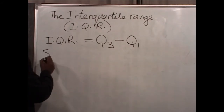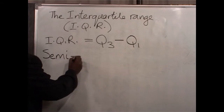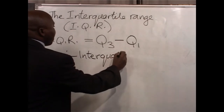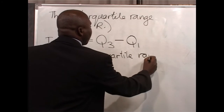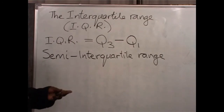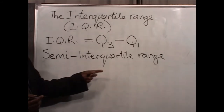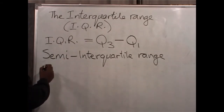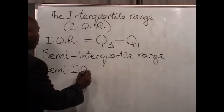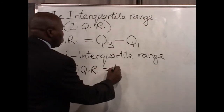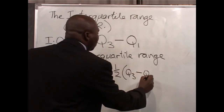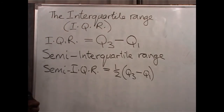The semi-interquartile range — remember, semi means a half, like a semicircle is half of a circle. So the semi-interquartile range is a half of the interquartile range. The semi-IQR will be equal to half of the interquartile range, which is Q3 minus Q1 divided by 2. We take the average of that difference.